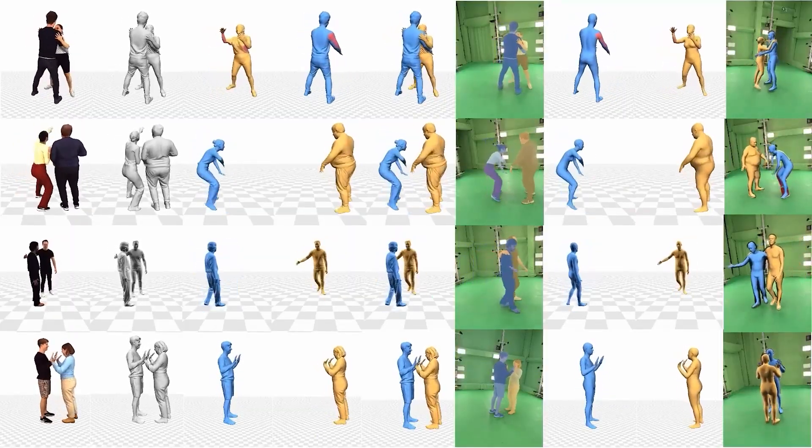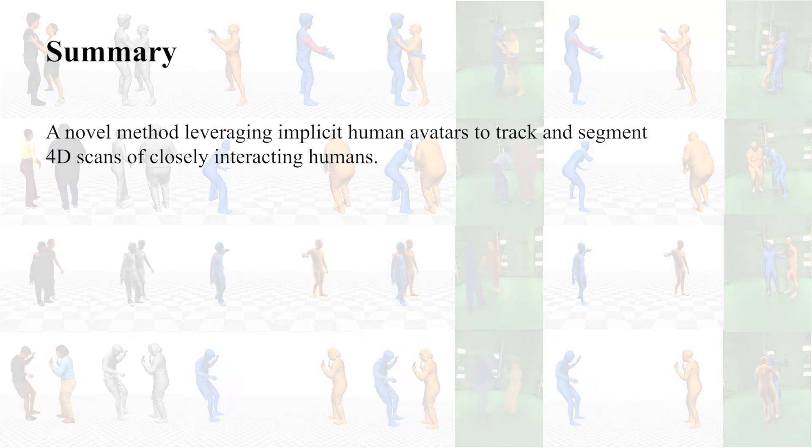In summary, in this paper we present a novel method leveraging implicit human avatars to track and segment 4D scans of closely interacting humans.